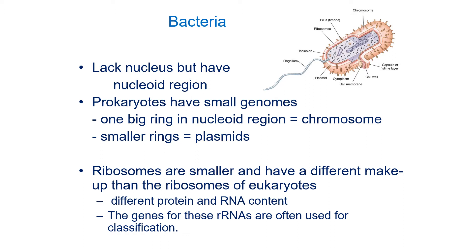Prokaryotes don't have that junk DNA. We do have these much smaller circles called plasmids, which can be really important — for instance, they can contain genes that convey resistance to an antibiotic. Plasmids are quite easily exchanged between bacterial cells. Bacteria have ribosomes, but they're a bit different from eukaryotic ribosomes — they're smaller and have a different composition, made up of different proteins and different sized pieces of RNA.